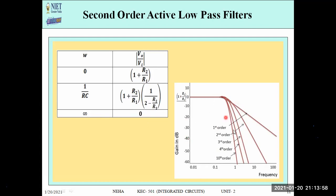Plotting the frequency response: the first order filter had a gradual roll-off after the cut-off frequency. The second order filter has a steeper drop. As the order increases from first to second, second to third, and so on, the plot approaches the ideal rectangular (brick-wall) response. A tenth order filter is nearly identical to the ideal response. That is why higher order filters are more effective than lower order filters.